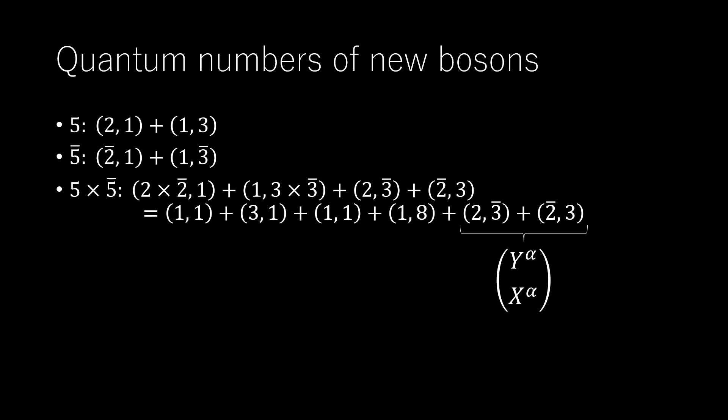To find the quantum numbers of the new bosons, we can proceed by analogy with smaller groups. For SU(2), for fermions in doublets to couple to gauge bosons, we have 2 × 2-bar = 1 + 3 and the Ws are in the triplet. For SU(3), it becomes 3 × 3-bar = 1 + 8 and the gluons are in the octet. For SU(5), it is 5 × 5-bar = 1 + 24.